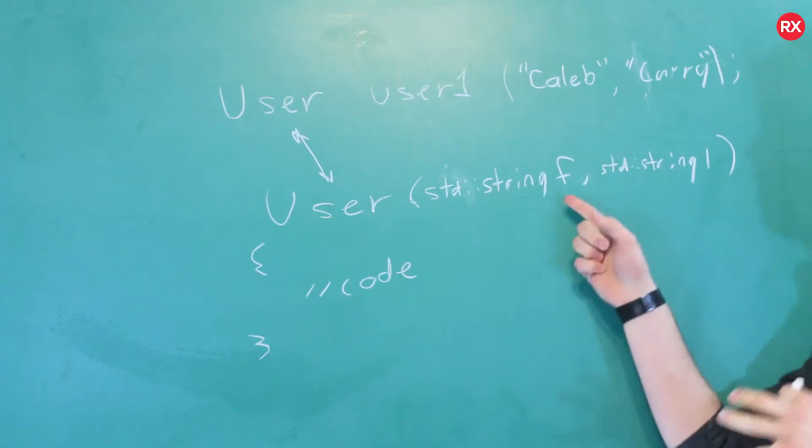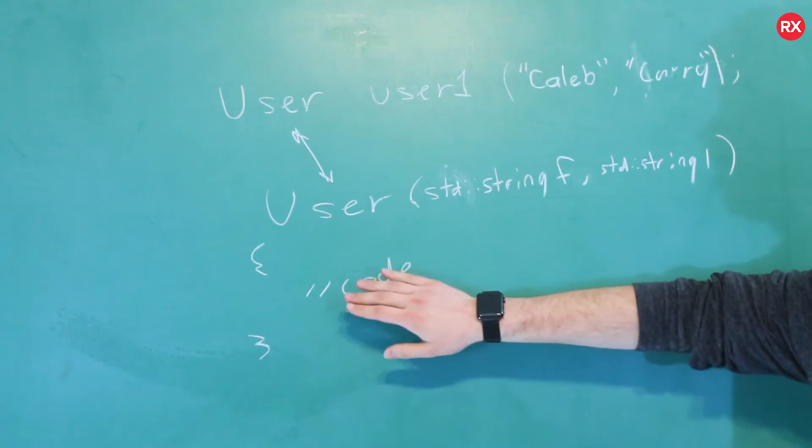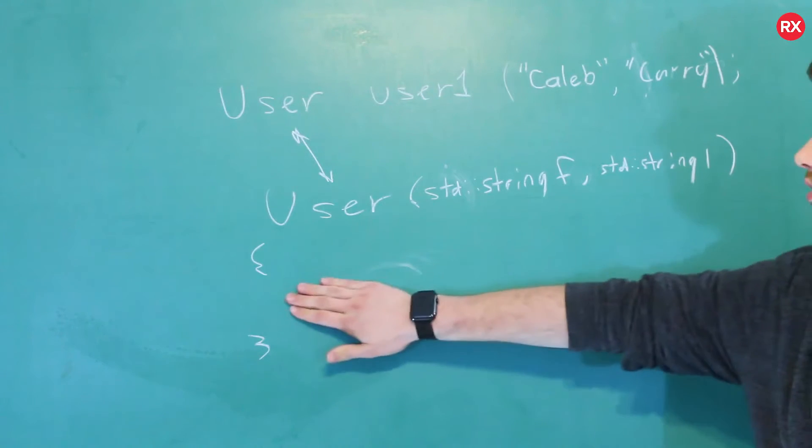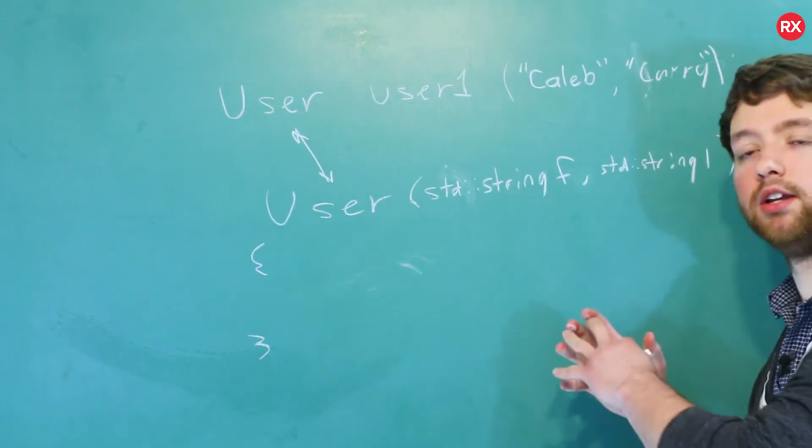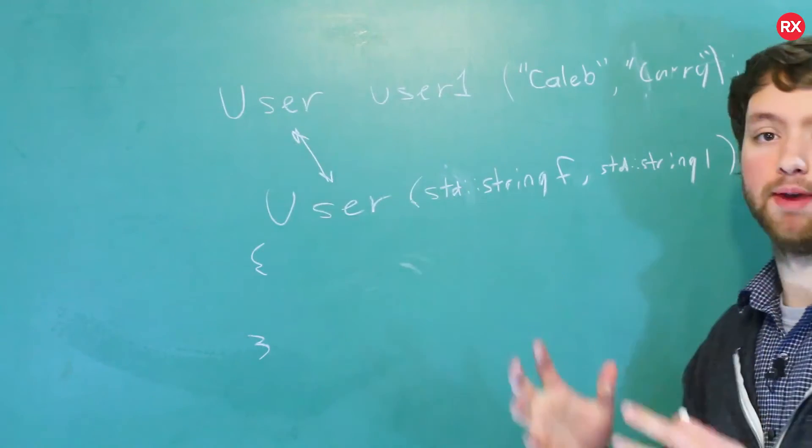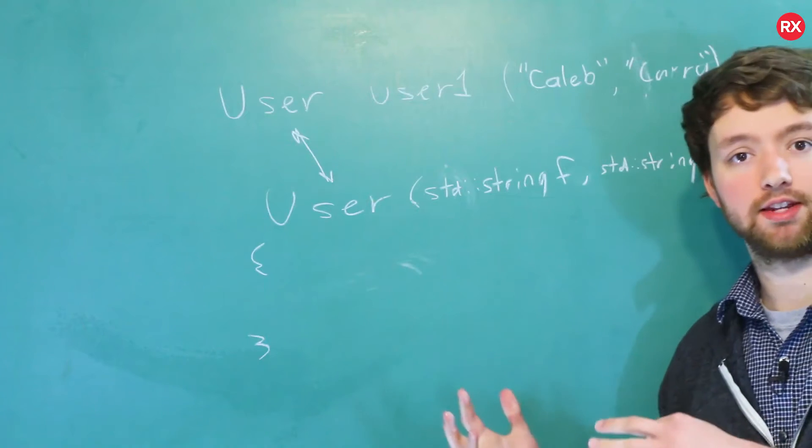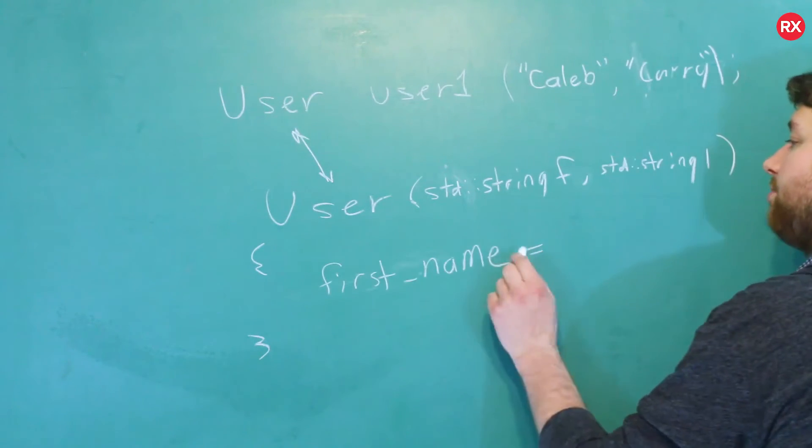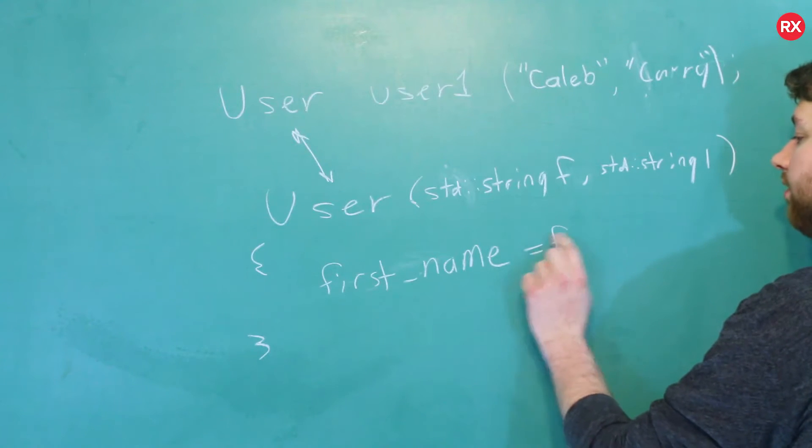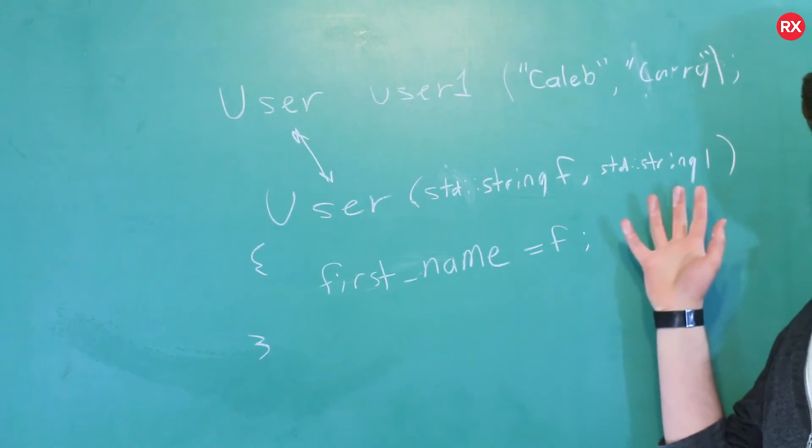In this situation, I just called first name F and last name L, just because I was running out of space. But this is a real possible constructor that we could create, and then inside of our code, we can take these parameters and assign them to the class's members. So, the class could have members such as first name and last name. So, we could do that in here. We could say first name will be assigned the value F, and we could do it again. Last name would be assigned the value L.